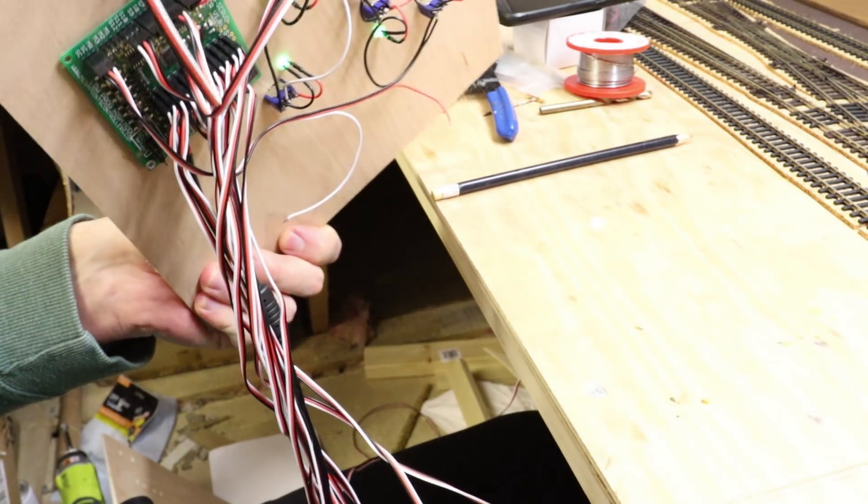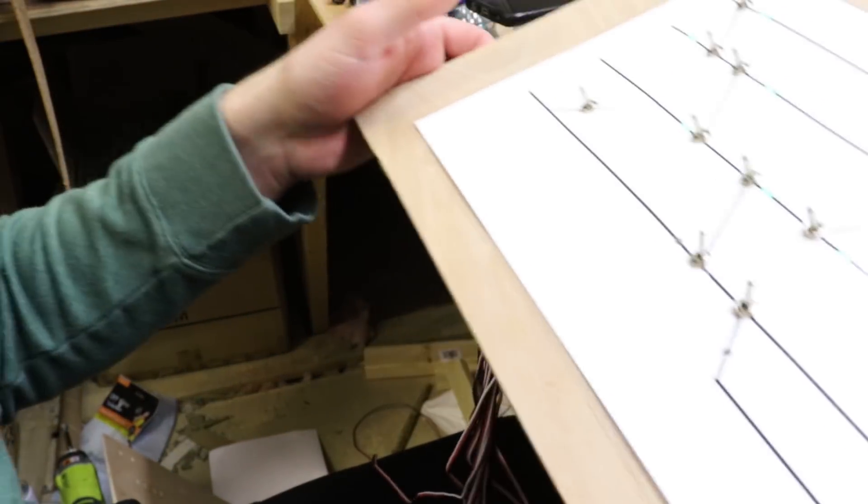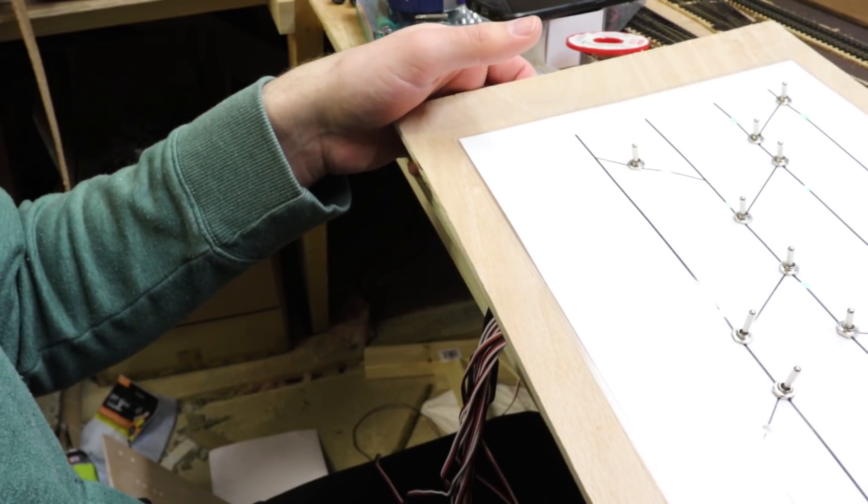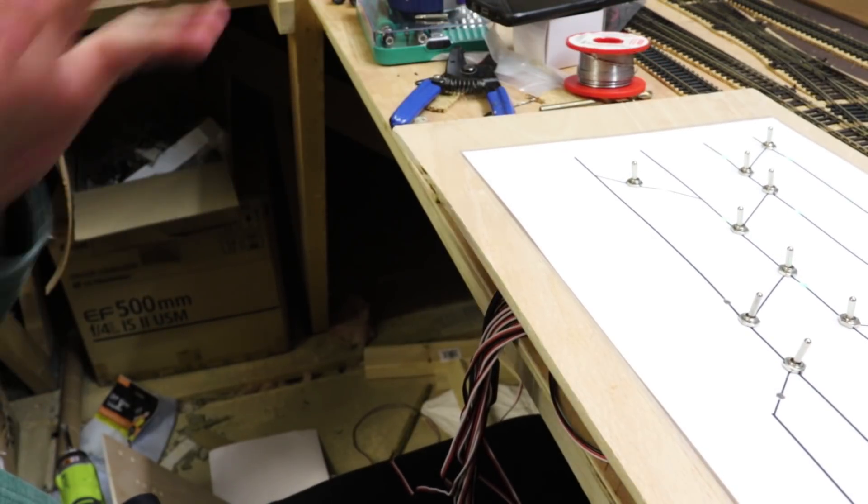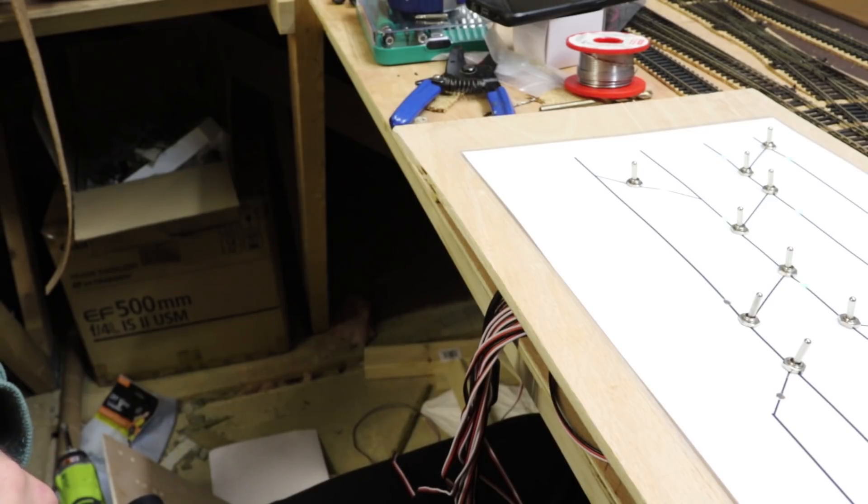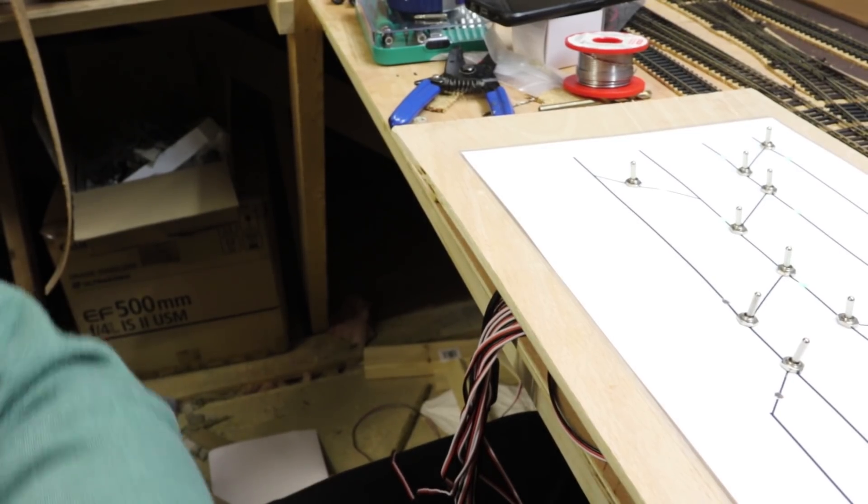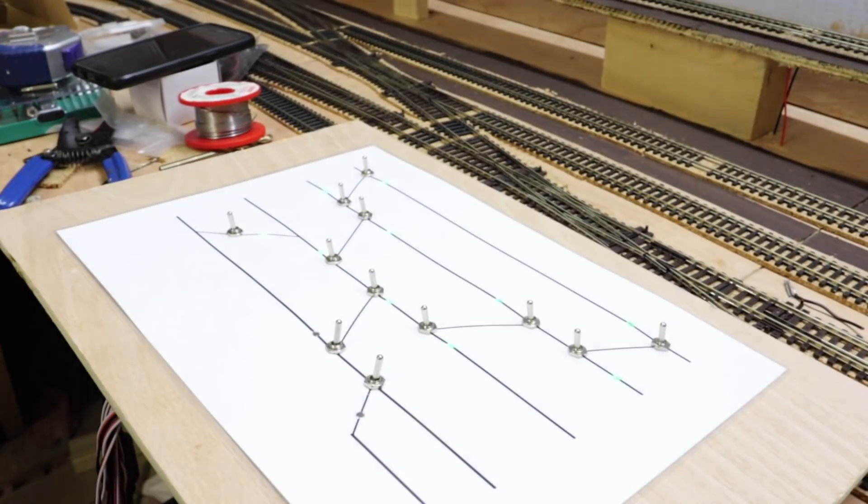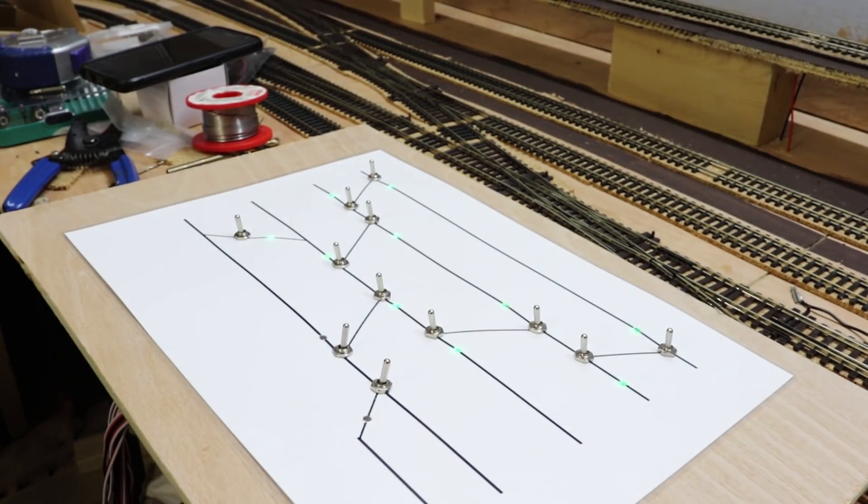Even better than that, if you get the DCCC module, then you can have everything where the points are and just have a single network cable going back to your control area. I don't think you need that. I don't know. Something you've got to look into.